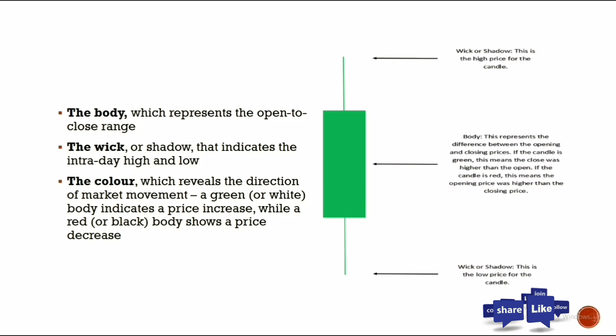The color reveals the direction of the market's movement. Most trading platforms use green and red — green represents an up candle and red or black represents a down candle. So anytime you see a candle, the three things to look at are: the body, the wick, and the color. The color gives you direction, the wick gives you the highs and lows, and the body represents the opening and closing points.